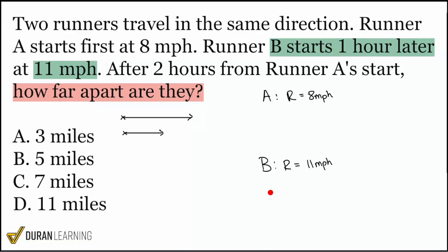How long is Runner A running? What time do we multiply the rate by? I see one hour and two hours mentioned — from the question sentence, it's going to be two hours, because it says 'after two hours from Runner A's start.' So the time for Runner A is two hours.